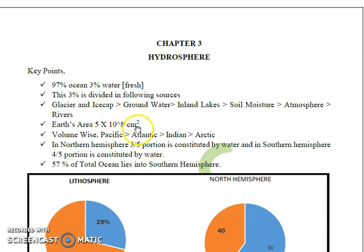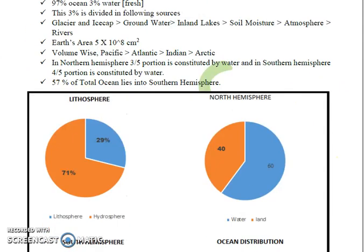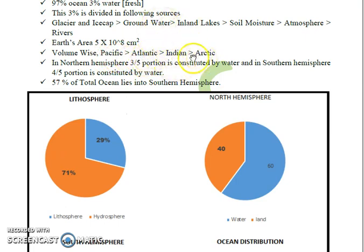Now coming to the oceans. Volume-wise, the largest ocean is the Pacific Ocean, followed by the Atlantic, followed by the Indian Ocean, followed by the Arctic. In the Northern Hemisphere, 60% of the area is generally constituted by land, as shown in the pie chart.